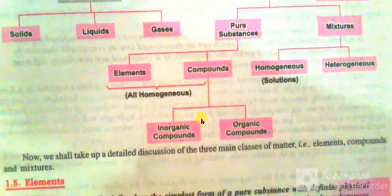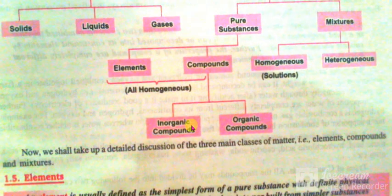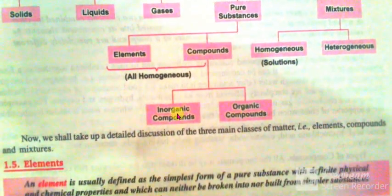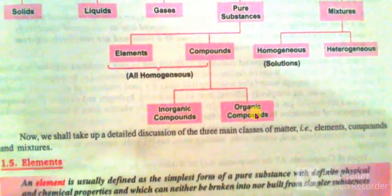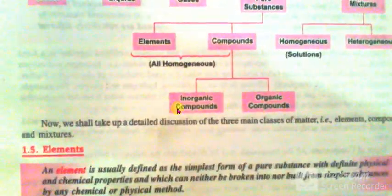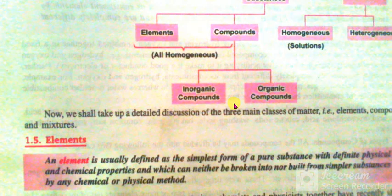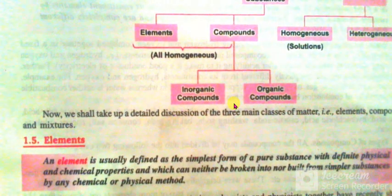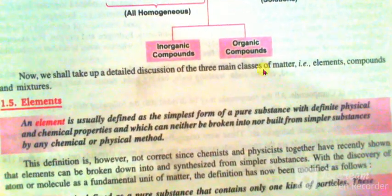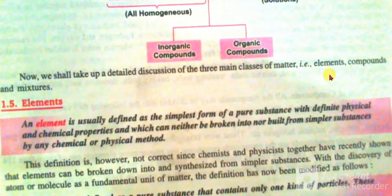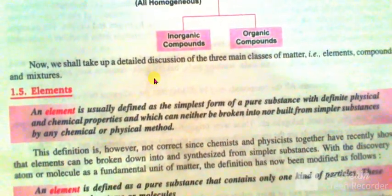Compounds can be divided into two forms: inorganic compounds and organic compounds. We shall now take up a detailed discussion of the three main classes of matter — that is, elements, compounds, and mixtures.